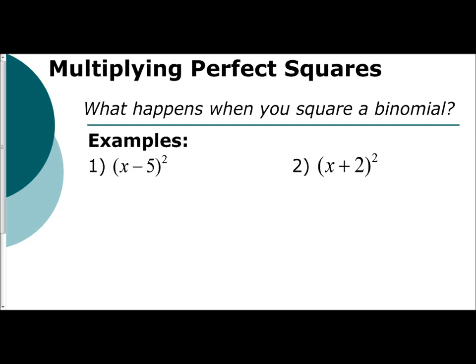Now if we're given two binomials and they're perfect squares, x minus 5 squared, x plus 2 squared. What happens when you square a binomial?